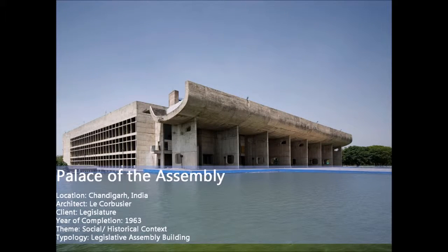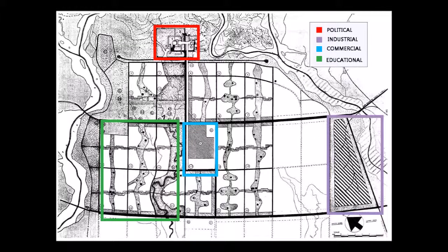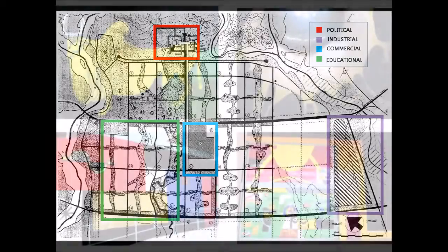Le Corbusier's Palace of Assembly was built in Chandigarh, India in 1963 as a legislative assembly building. The city of Chandigarh is composed of four zones — political, industrial, commercial, and educational — designed by Le Corbusier and meant to complement each other.